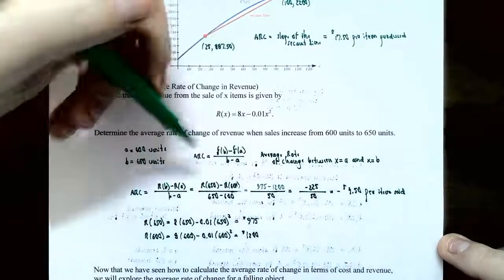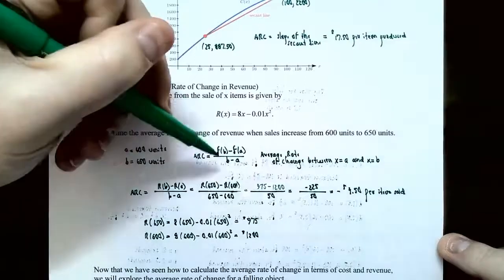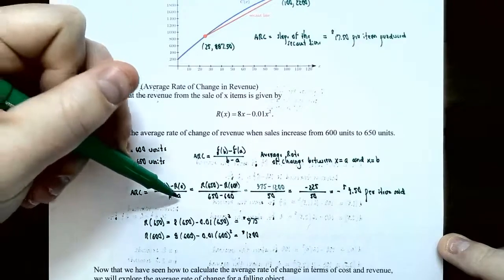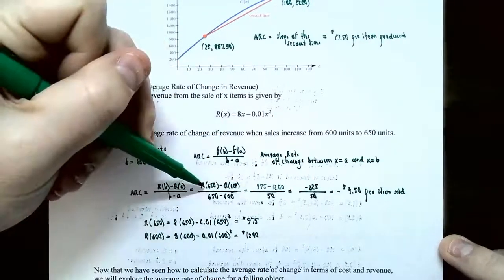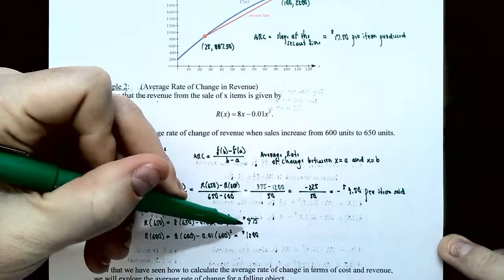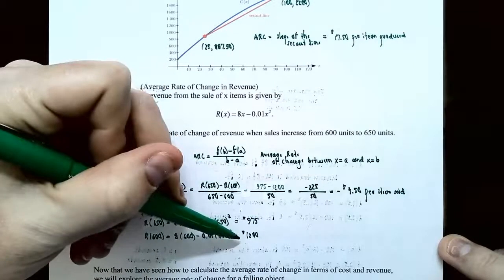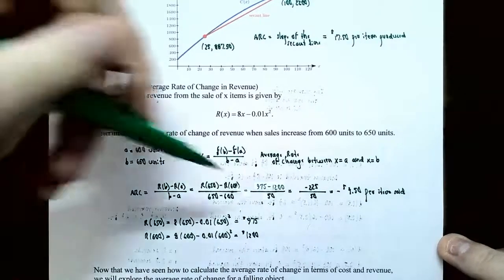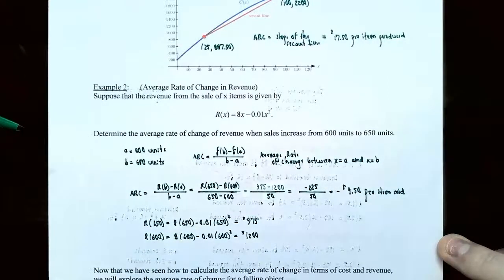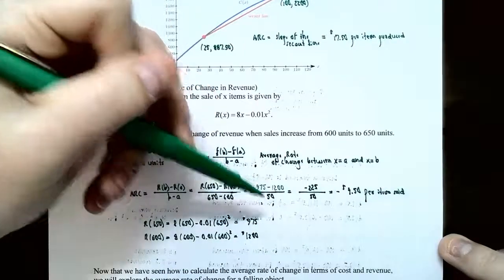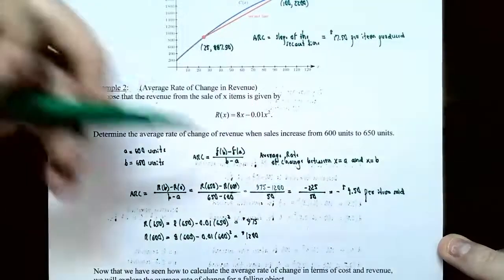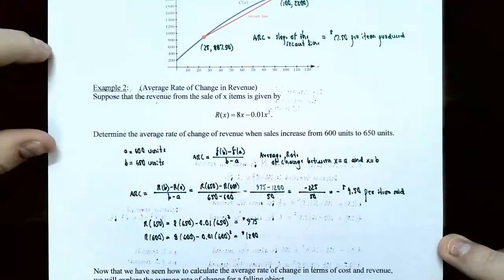Using the formula f of b subtract f of a divided by b minus a for the revenue function: revenue at 650 units subtract revenue at 600 units divided by 650 subtract 600. Plugging 650 into the revenue function gives $975, and plugging in 600 gives $1,200. So the numerator is 975 subtract 1,200, and the denominator is 50 units sold. The revenue is decreasing: negative 225 divided by 50 gives negative $4.50 per item sold.